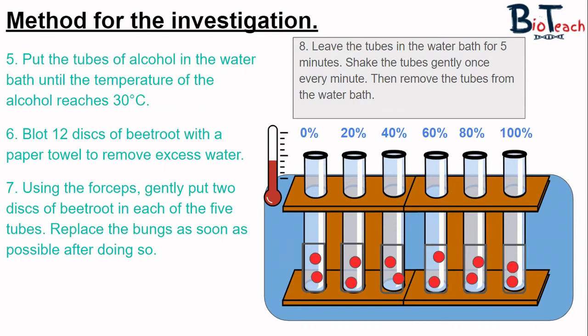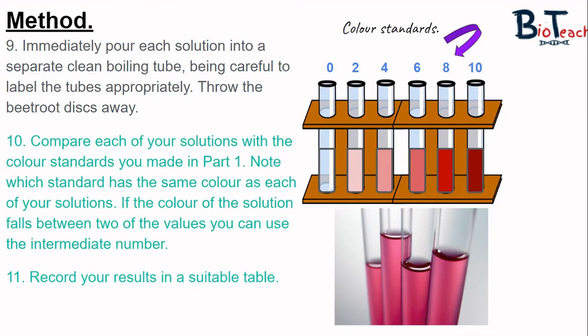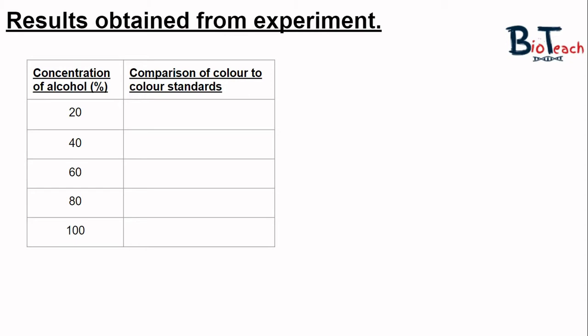Once the five minutes is up, remove these tubes from the water bath. Pour each solution into separate clean boiling tubes that have been labelled properly with the concentration of alcohol so you don't get them mixed up, and you can discard the discs of beetroot at this stage. We would then visually compare each of the solutions with the colour standards made earlier. Note which standard has the same colour, and if you think the colour falls between two values you could use the intermediate number — for example, if a colour value is between 2 and 4, record it as 3. The results are recorded on a table with the concentration of alcohol on the left-hand side and the colour reference comparison on the right-hand side.